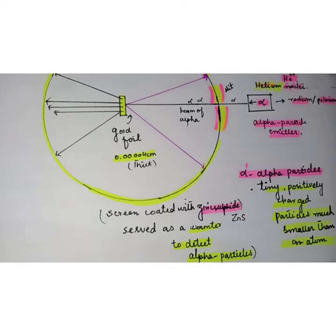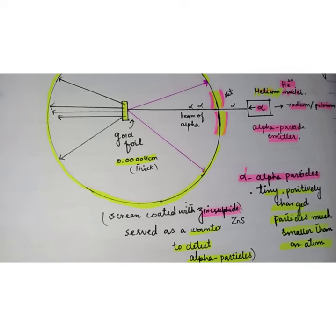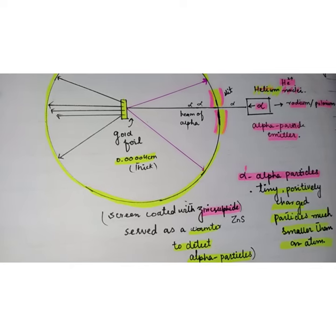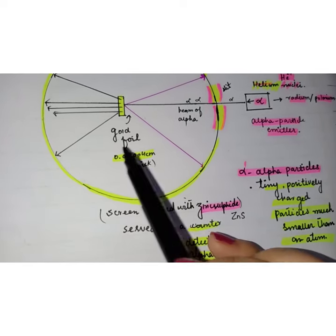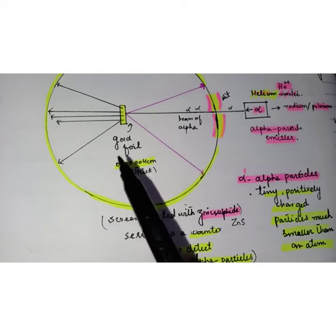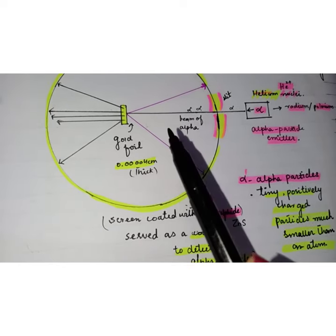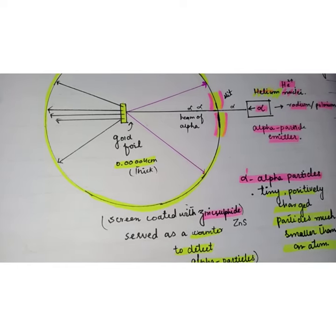The screen was coated with zinc sulfide to render it fluorescent and serve as a counter to detect alpha particles. Each alpha particle striking the fluorescent screen produced a burst of light which was visible through a viewing microscope. The screen was movable, allowing Rutherford and his colleagues to determine whether any alpha particles were being deflected by the gold foil.